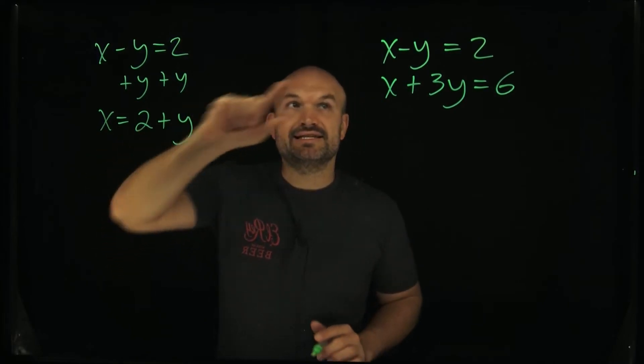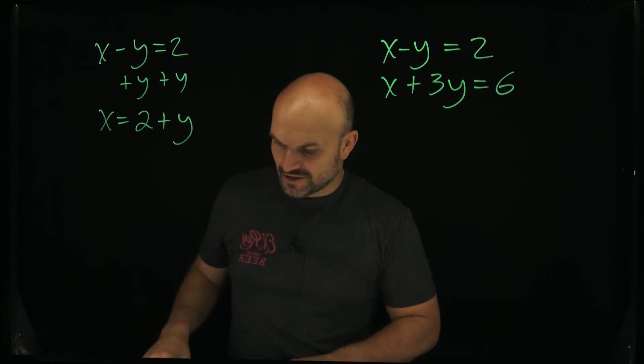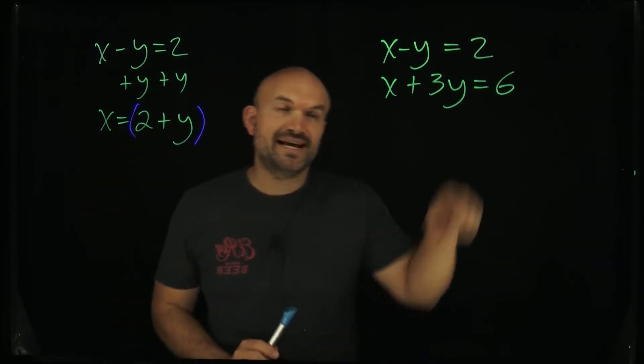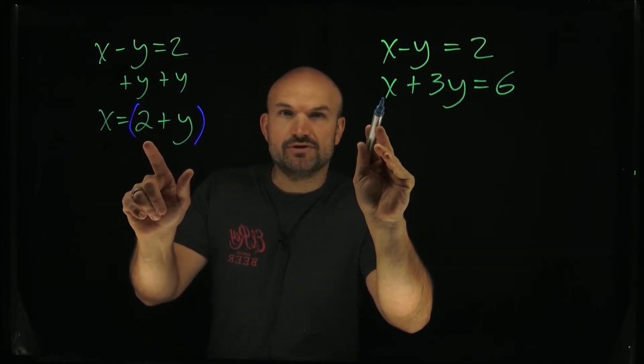Now what we've done is we've solved for x in this top equation. Now what we're gonna do is we know the value of x is 2 plus y. So what I'm gonna do is kind of put parentheses around this and say alright, if x is equal to 2 plus y, then in the second equation I can replace this x with the parentheses 2 plus y.